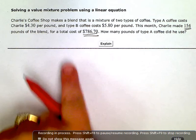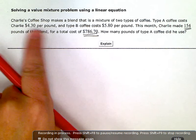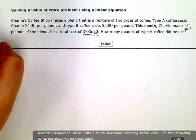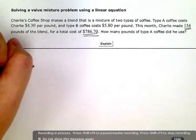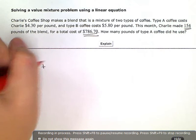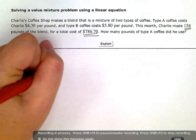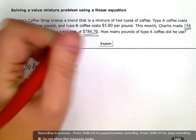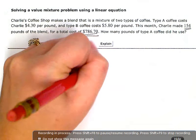Well, the total cost would be $4.30 times every pound of coffee A plus $5.80 times every pound of coffee B, and that would give me $786.70.